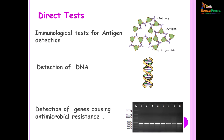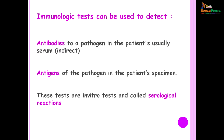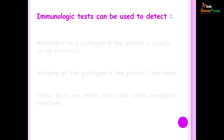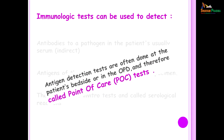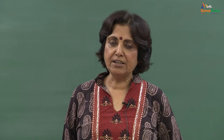In the direct tests we have the immunological tests in which we detect antigen. You can detect DNA or you can also detect genes which cause antimicrobial resistance. Immunological tests can be used to detect antibodies to a pathogen in the patient's serum — this comes under indirect tests. Antigens of the pathogen in the specimen indicate a direct test, and these tests when conducted in vitro are called serological tests. Nowadays we have antigen detection tests which can be performed at the patient's bedside, referred to as point of care tests because the results are available immediately.